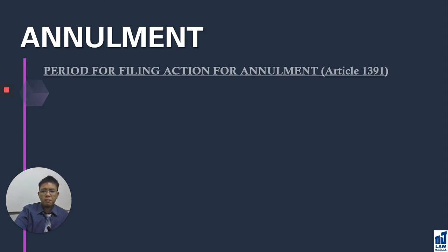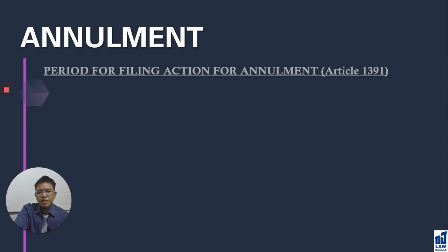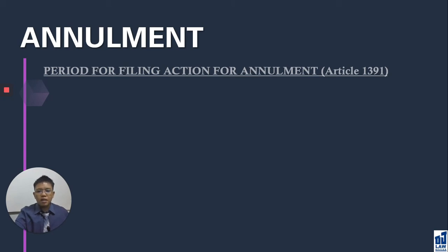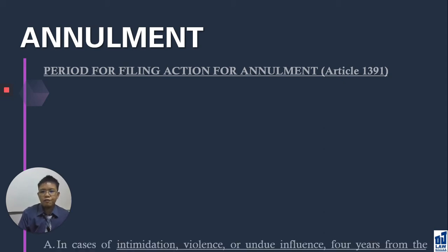In Article 1391, the general rule is given: the prescriptive period for filing an action for annulment is 4 years. Why is there a prescriptive period? Because the law wants stability in contracts. You cannot wait 50 years and then decide to have the contract annulled. After 50 years, wouldn't that be implied ratification on the part of the injured party? So your right has a limit — you can exercise it only within a certain number of years, which is 4 years as a general rule. In Article 1391, this period is qualified.